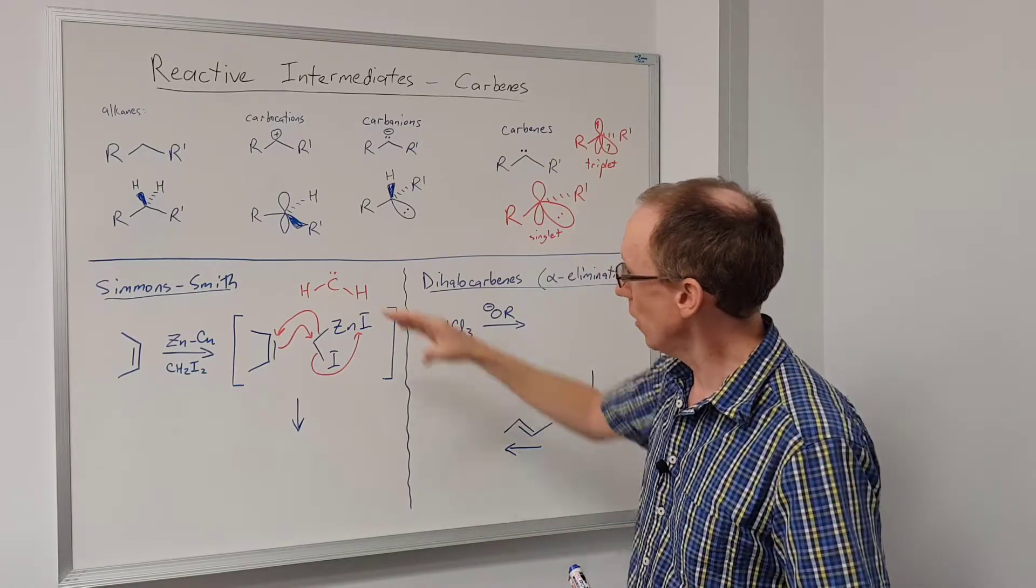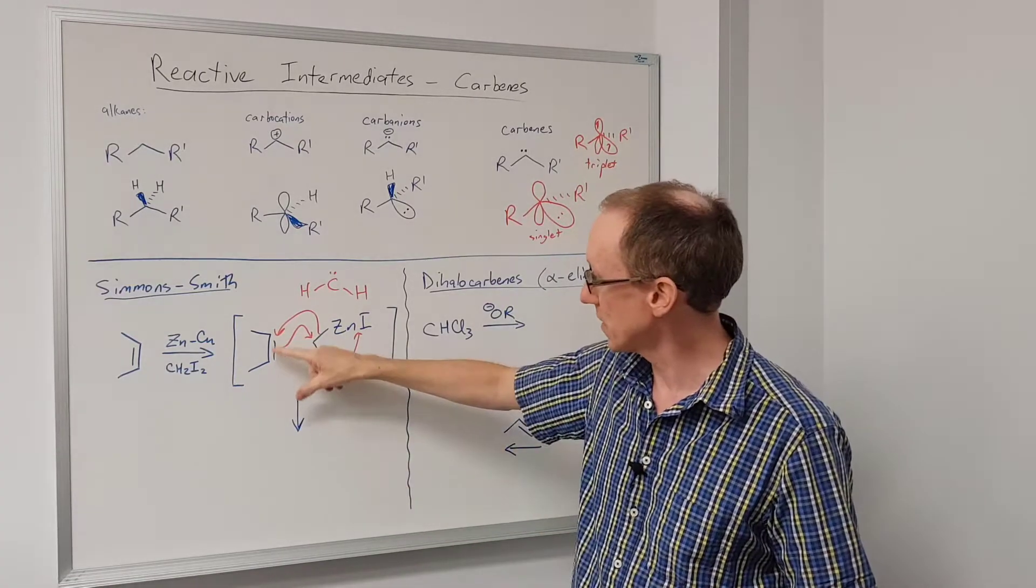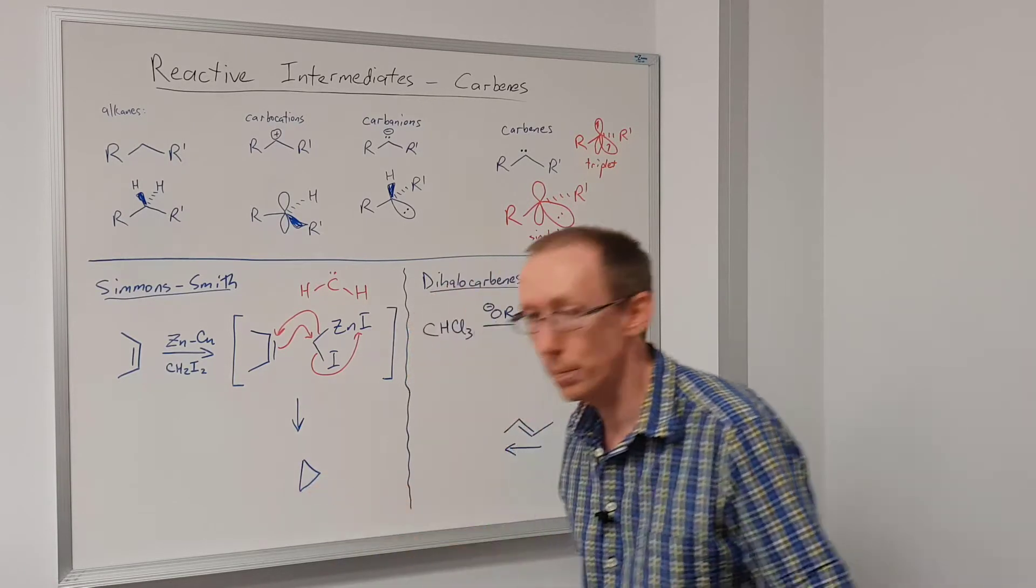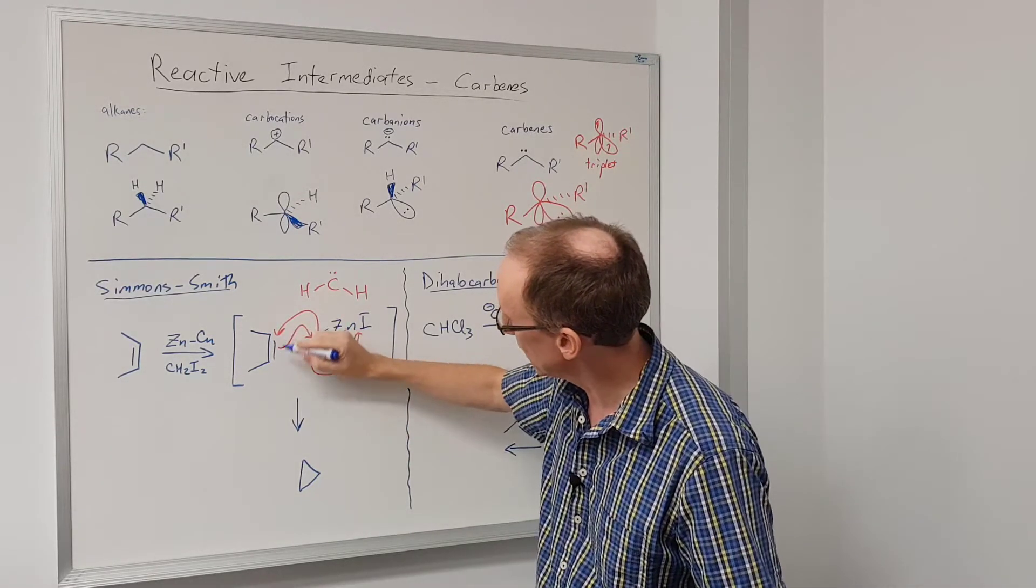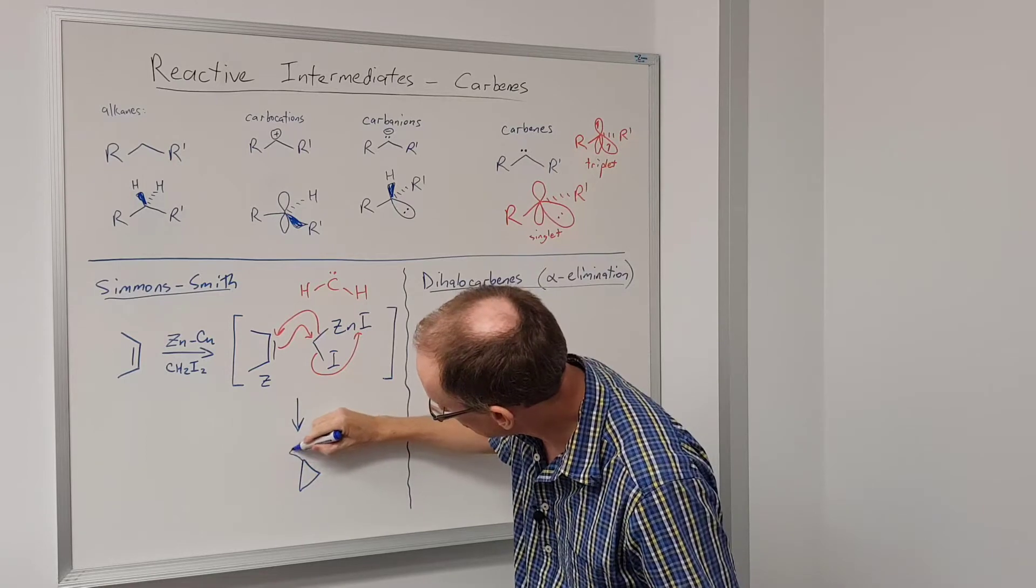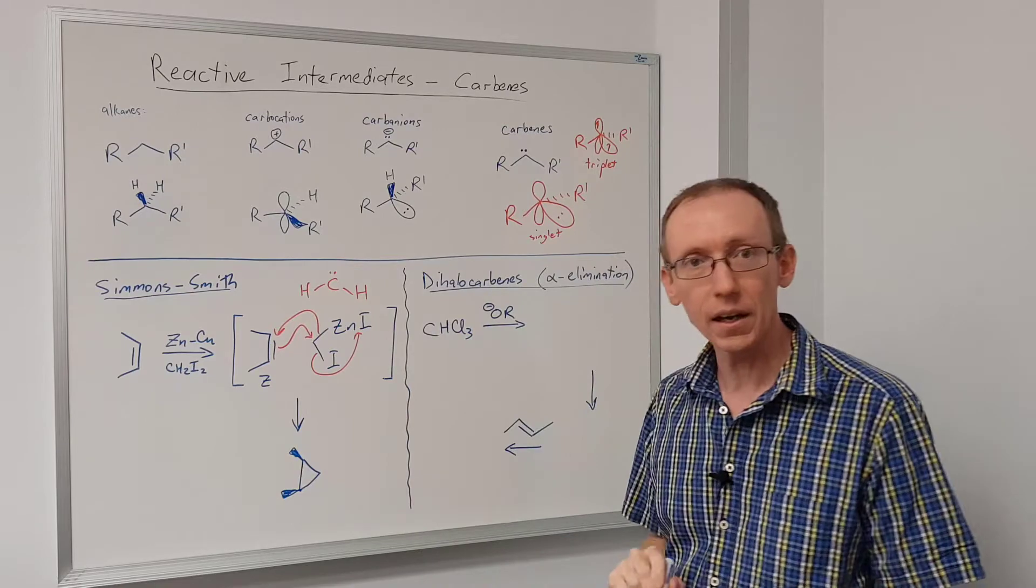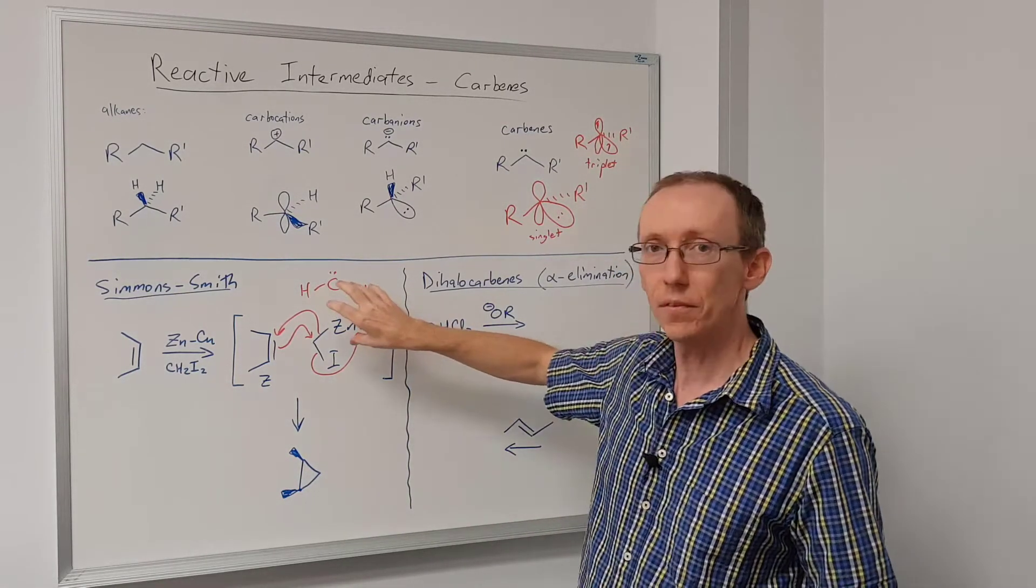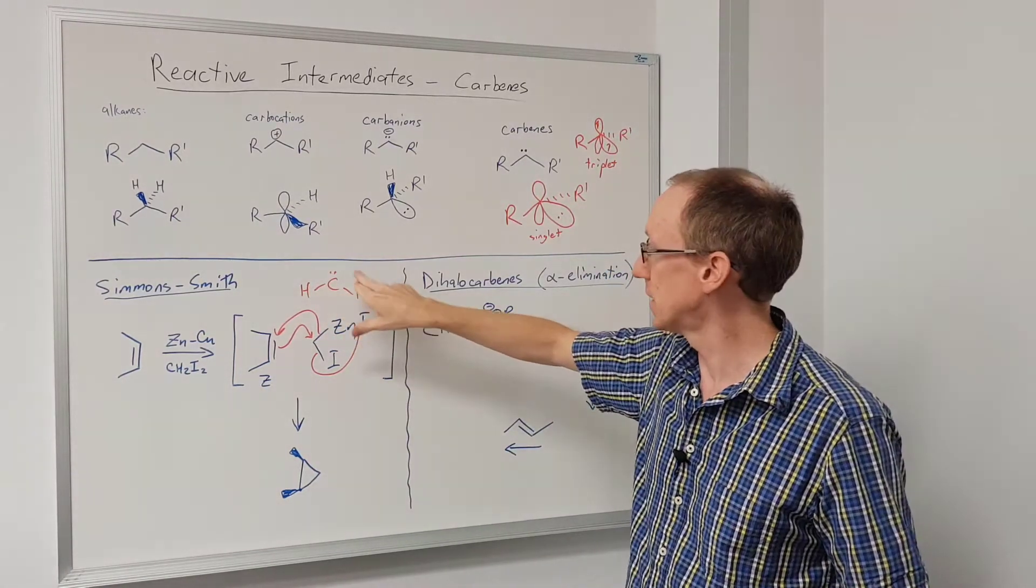So overall that process generates two new bonds to carbon at where this alkene used to be, and so the product is a cyclopropane, a three-membered ring. And importantly both of those bonds are made at the same time. So if we have a Z double bond, we're going to get a cis diastereomer of the product. So we'll get a cyclopropane that looks like that. The Simmons-Smith reaction - we generate a species that reacts like it's this carbene.